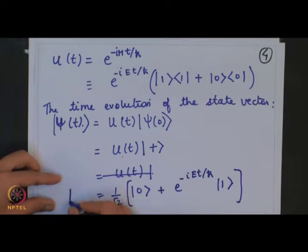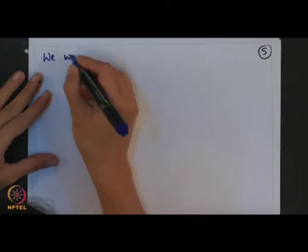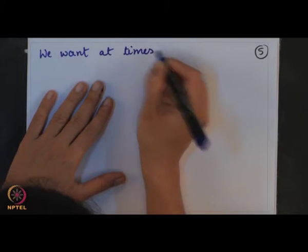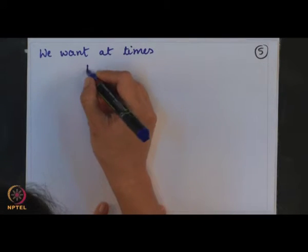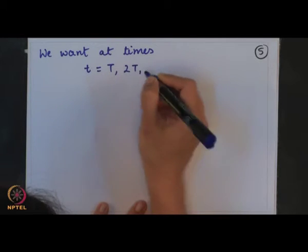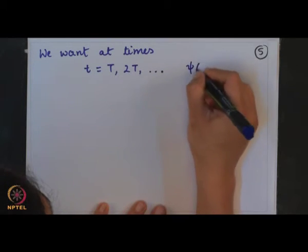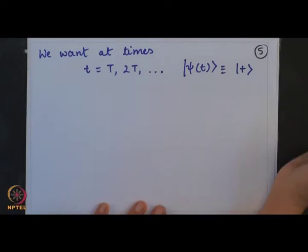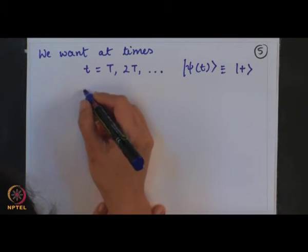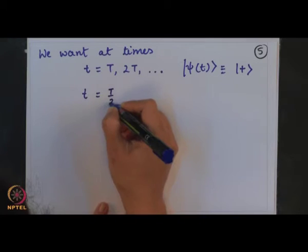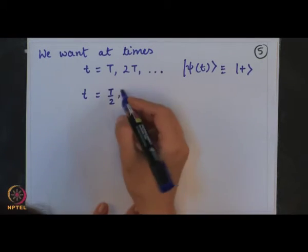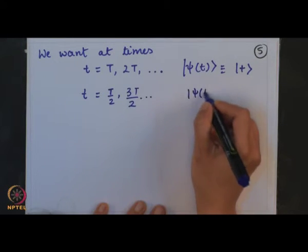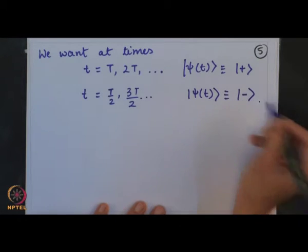We can substitute for these and directly write (1/√2)|0⟩ plus the evolution operator applied to give e^(−iEt/ℏ)|1⟩. This is the time evolution operator. What we want is that at times t = T, 2T, etc., ψ(t) should be ket-plus, and at times t = T/2, 3T/2, etc., ψ(t) should be in state ket-minus.